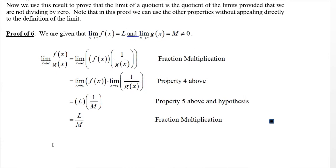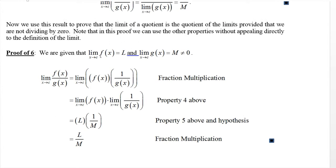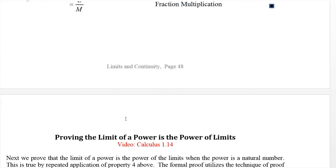Now we use this result to prove the quotient rule without needing to mention any epsilons or deltas. We're given that the limit as x approaches c of f(x) is L, and the limit of g(x) is m, with m ≠ 0. We think of f(x)/g(x) as the product f(x) · (1/g(x)). Property 4, proved in the previous video, says the limit of a product is the product of the limits. The first limit is L by hypothesis, and the second is 1/m by property 5 we just proved. Multiplying gives L/m. So the limit of the quotient is the quotient of the limits.